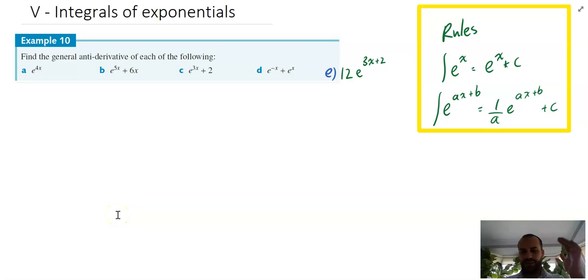Alright, so this video is the integrals of exponentials. This should be really easy because derivatives and integrals are opposites of each other, and the derivative of e to the x is e to the x. So the integral of e to the x must be the reverse of that, which is e to the x. So very straightforward here.